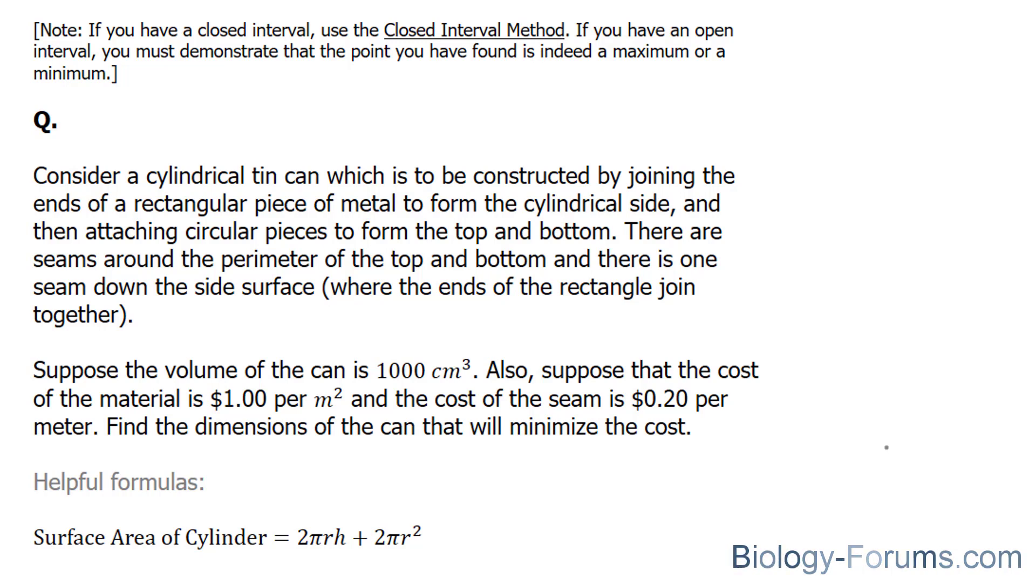Suppose the volume of the can is 1,000 centimeters cubed. Also, suppose the cost of the material is $1 per meter squared, and the cost of the seam is 20 cents per meter. Find the dimensions of the can that will minimize the cost.